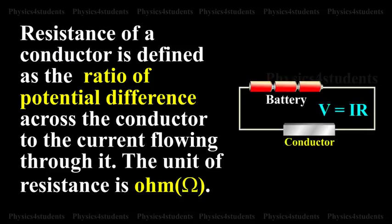Resistance of a conductor is defined as the ratio of potential difference across the conductor to the current flowing through it. The unit of resistance is Ohm.